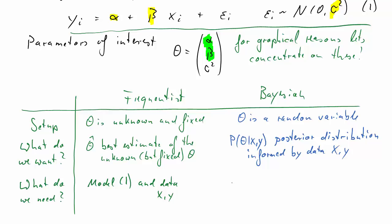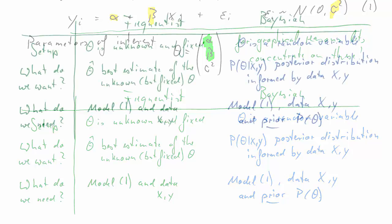A Bayesian would need exactly the same for starters. It needs a model that relates Y and X with a distributional assumption, and we need data. But on top of that, a Bayesian will also need what's called a prior distribution of theta. That's a distribution of theta without being informed by the data X and Y.